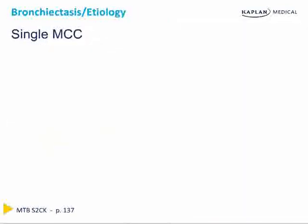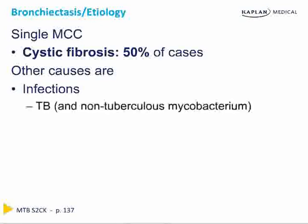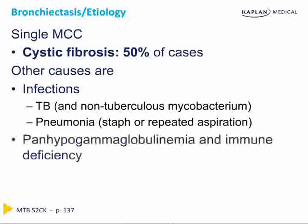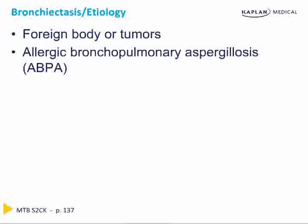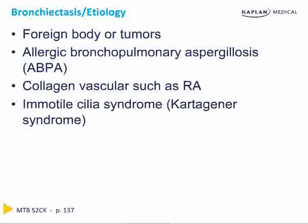By far, the most common cause of bronchiectasis is cystic fibrosis, which represents 50% of cases. Other causes include infections such as tuberculous and non-tuberculous mycobacterium, in particular MAI, pneumonia — most commonly staph — or repeated aspiration, pan-hypogammaglobulinemia or immune deficiency, foreign body or tumors, allergic bronchopulmonary aspergillosis (ABPA), collagen vascular disease such as rheumatoid arthritis, or immotile cilia syndrome, also known as Kartagener disease.